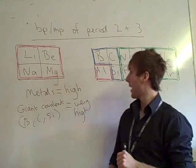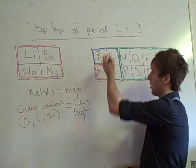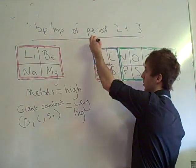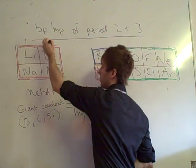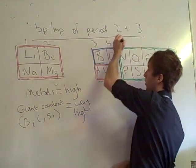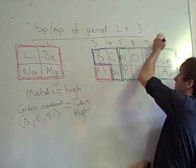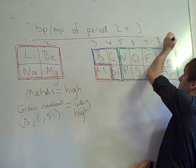And then finally, we've got our elements in green. This is group one, group two, group three, group four, group five, group six, group seven, and group eight, sometimes called group zero.